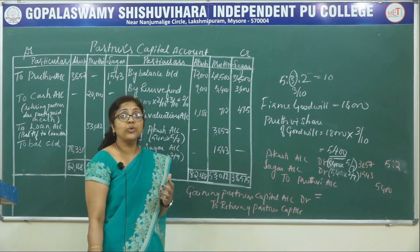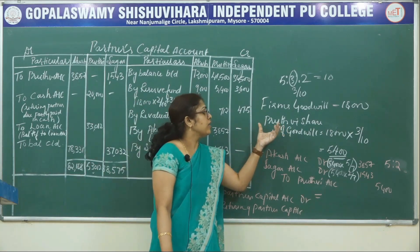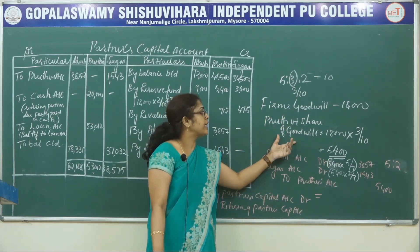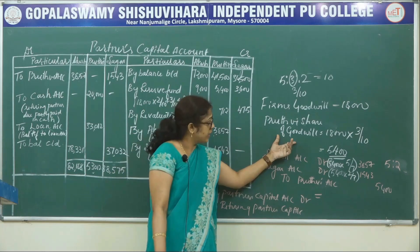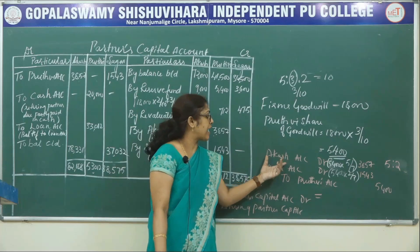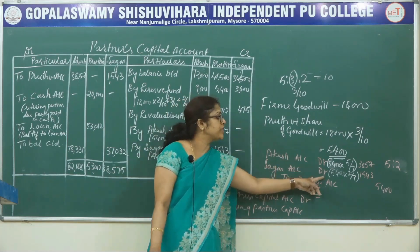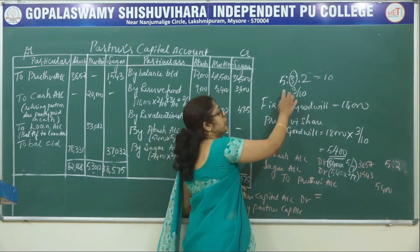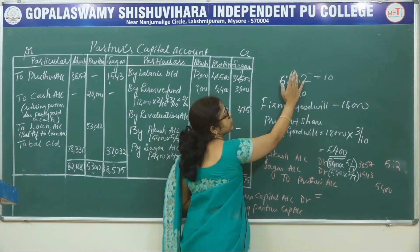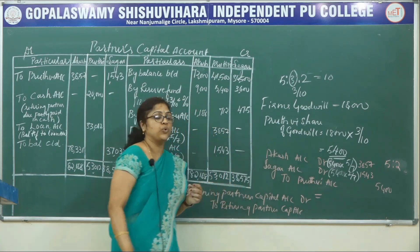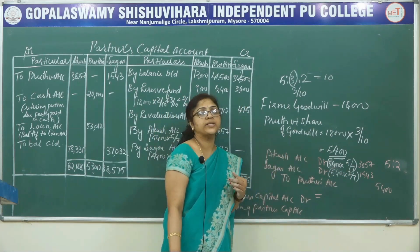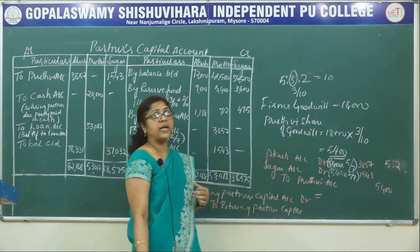The goodwill treatment according to AS26: first find out the retiring partner's share of goodwill. In the question the firm's goodwill is given — from that, the retiring partner's share of goodwill has to be calculated. Then it should be distributed to the gaining partners. Here Akash and Sagar are gaining partners; it should be distributed in their gain ratio. The old ratio is 5:3:2 and Prithvi retires — so the remaining ratio is 5:2. This remaining ratio is the gain ratio, and the goodwill is written off in this gain ratio by the remaining partners.